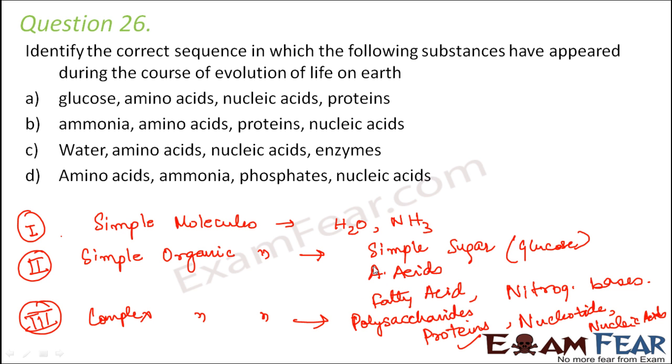Proteins were formed by combination of many amino acids. Nucleic acids were formed by combination of many nucleotides, but nucleotide itself is a complex organic molecule. Nucleotide was formed by combination of a nitrogenous base, a phosphoric acid, and a pentose sugar. So nucleic acid is like one step ahead. So the right option would be B. First ammonia, then amino acids, then proteins, and then nucleic acids.